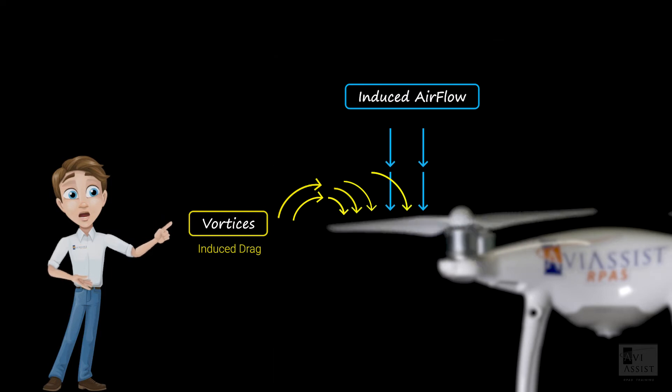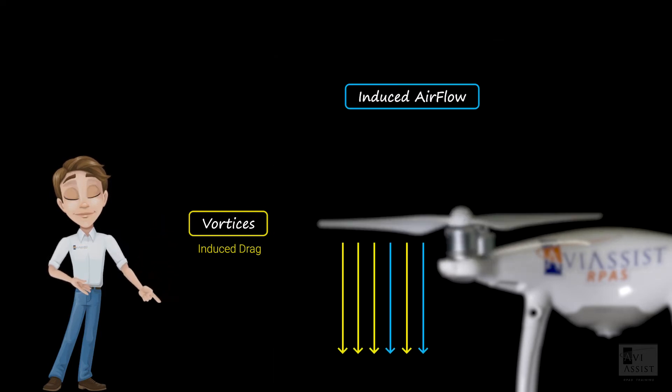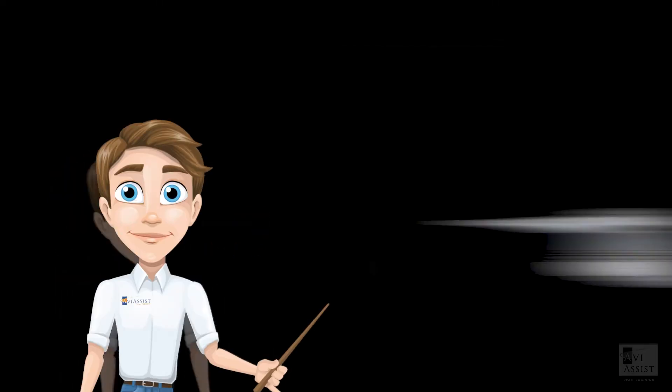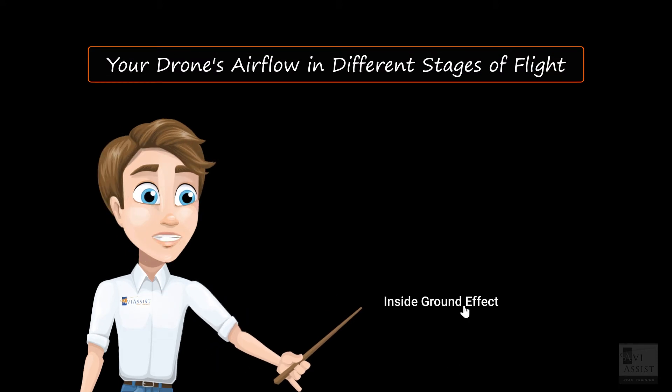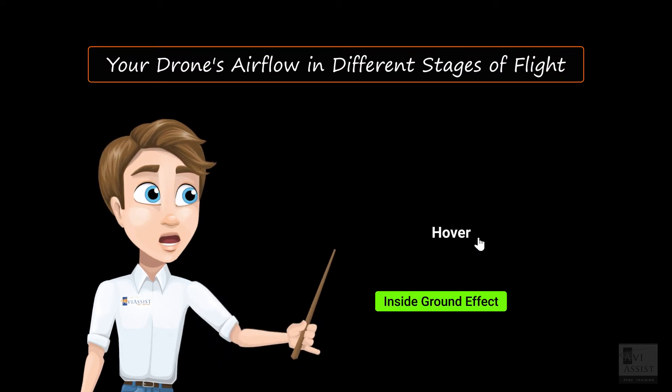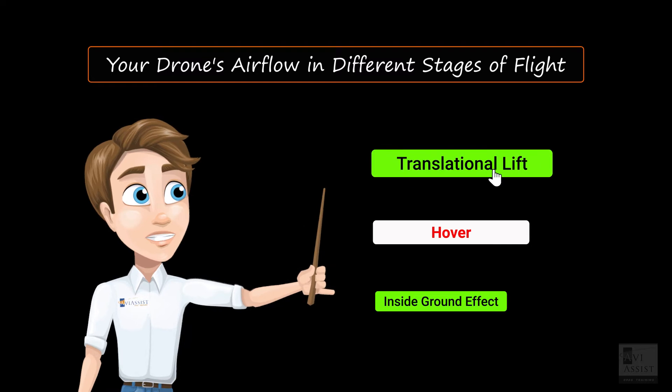The larger the vortices, the more induced flow through the rotor. Now that we understand the airflow around the rotor blade, there are different stages of flight where this airflow is affected.